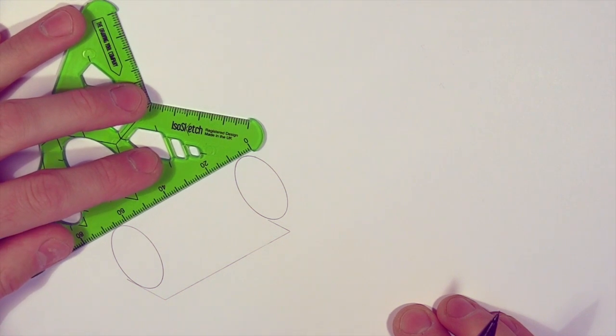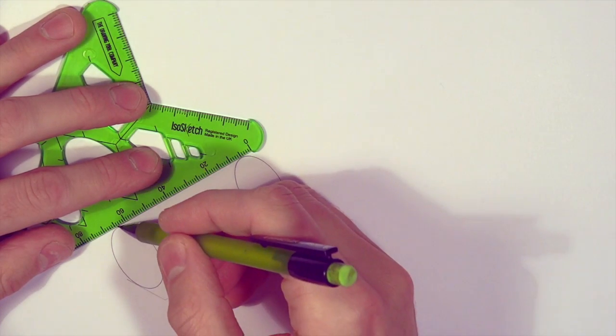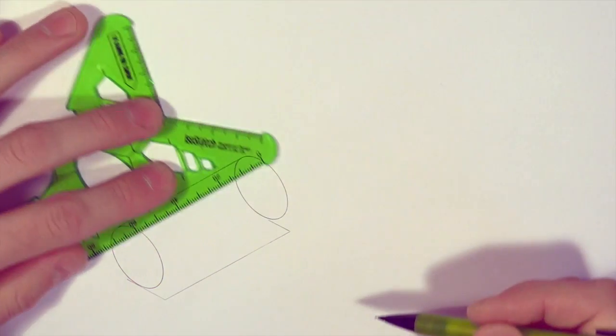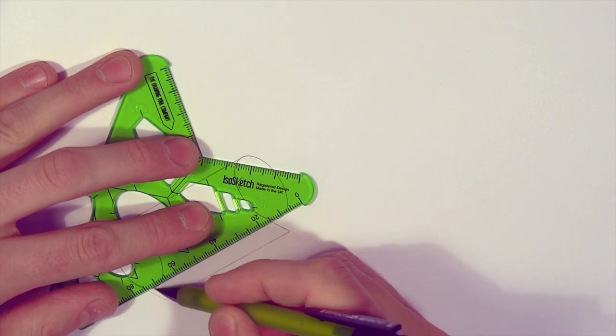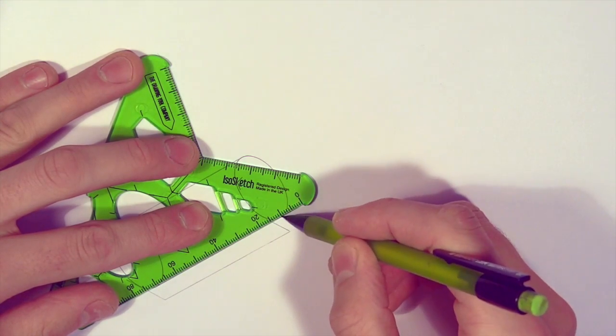Now what you've got is a pair of isometric circles that should line up perfectly, so the last thing to do is just to join them up with the ruler. You could be really clever here and use the bump stops to make sure you stop in the right place, but here I'm just guessing it, whichever you feel most comfortable with.